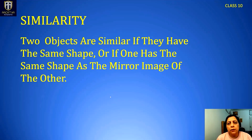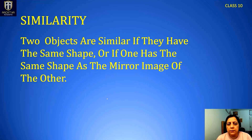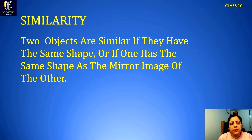Now if we talk about similarity, in a layman's term, Euclidean geometry says two objects are similar if they have the same shape. Here it is talking about shape only, not size, or one has the same shape as the mirror image of the other. Shape is the same whether we compare one object with the other or with the mirror image of the second object. They look alike — their shapes are the same but their sizes are different.